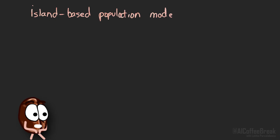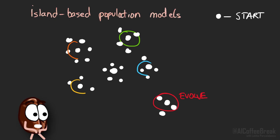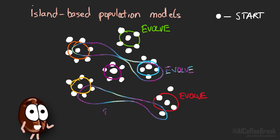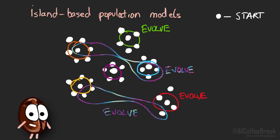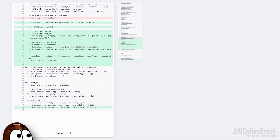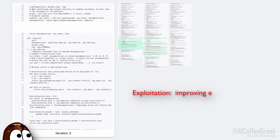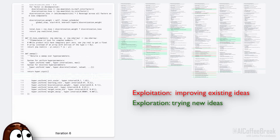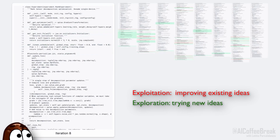Island-based population methods take a different angle. The idea is to keep evolution isolated for a while, to allow each subpopulation or island to specialize without interference — each island explores its own path in parallel. Occasionally, one island might receive a solution from another, like borrowing an idea from a distant lab. This cross-pollination introduces fresh perspectives and can help a stuck island escape local optima by importing innovations discovered elsewhere. Together, these strategies help Alpha Evolve balance exploitation with exploration, which is critical when you're searching for genuinely new algorithms, because breakthroughs often come from the unexpected.